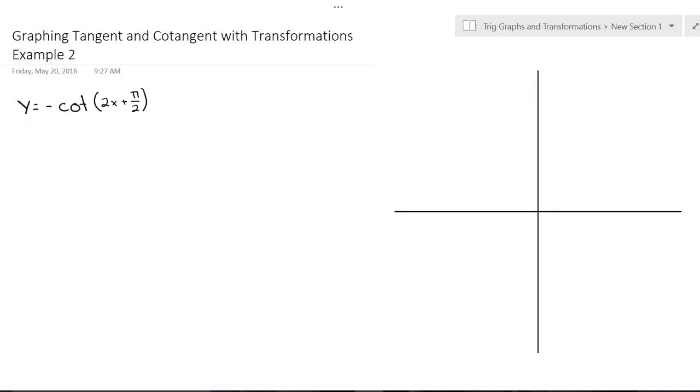Hey guys, so today we're going to do a video of our second example of graphing tangent and cotangent with transformations. And here we're given y equals negative cotangent of 2x plus pi over 2.